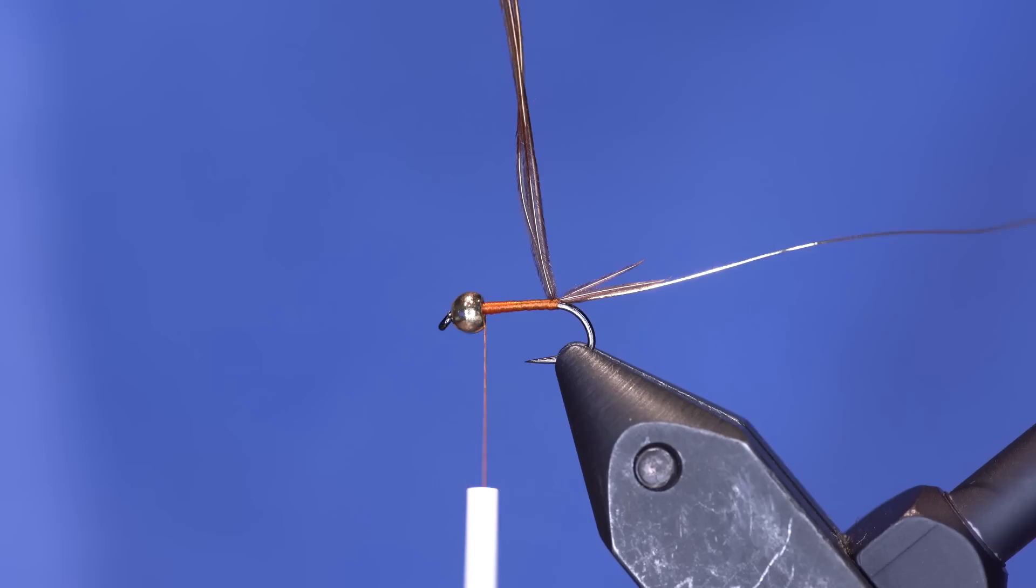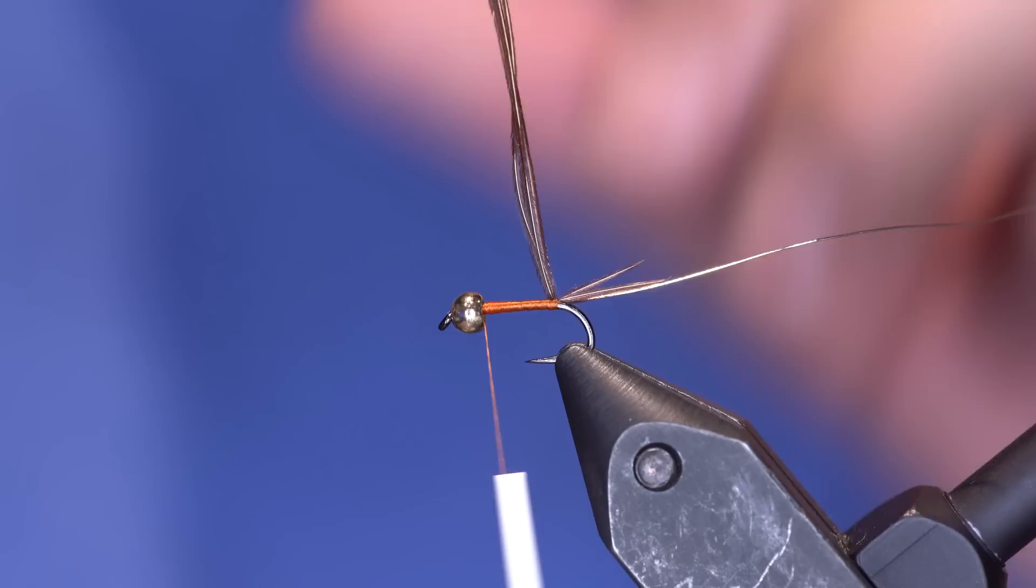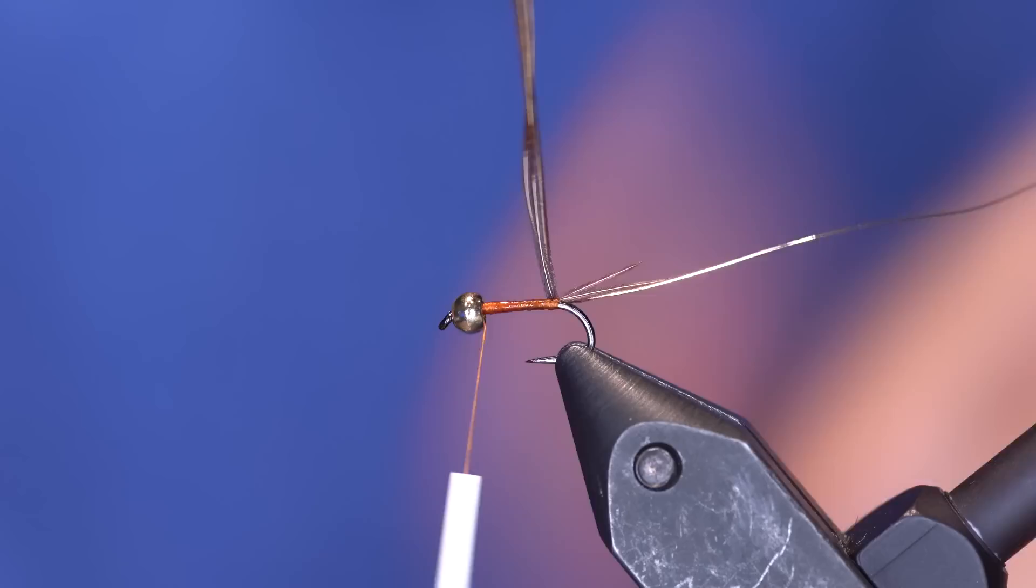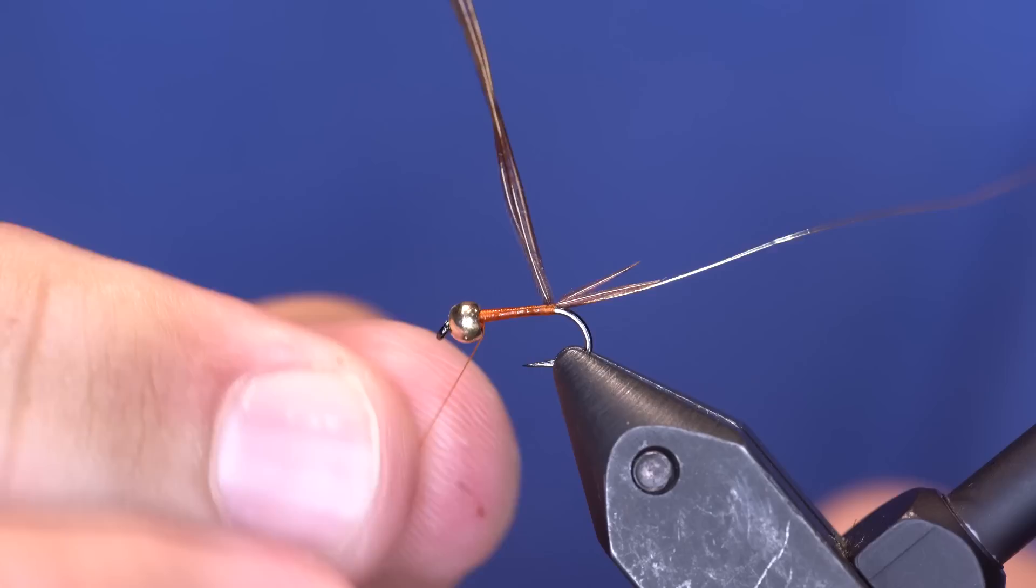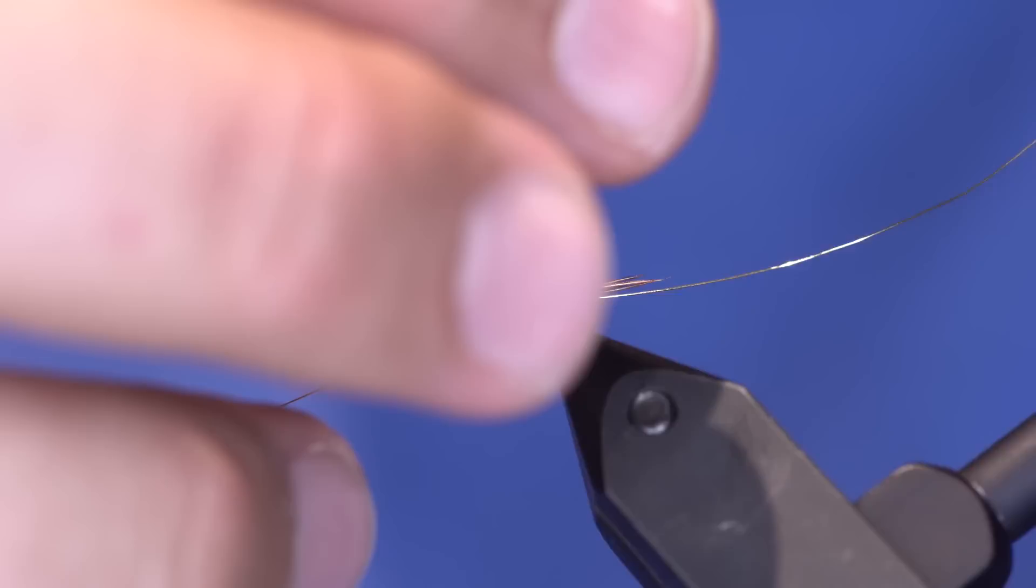And now build up a very slight taper. That's about all I want right there, can't even hardly see it. Now as we learned already, pheasant tail is not very durable, so I'm gonna put some head cement on it. When I say head cement I meant super glue. And I'm gonna put a quick half hitch in this because I like to wrap this rotary style.